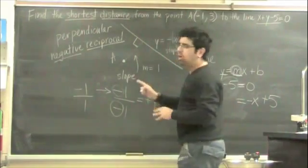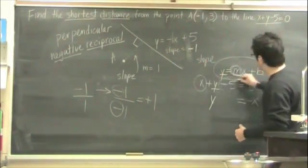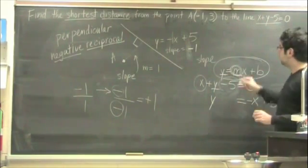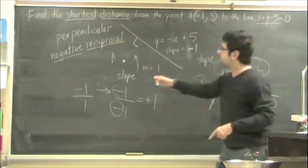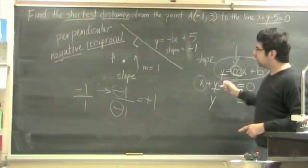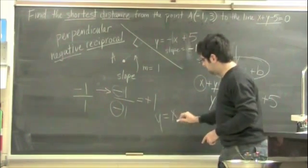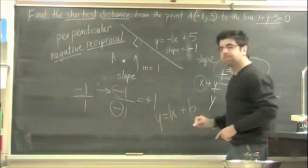Now, what we know about this equation is, if we think about the terms here y equals mx plus b, what we do know from this shortest point is the slope. And that slope is y equals 1x plus b.